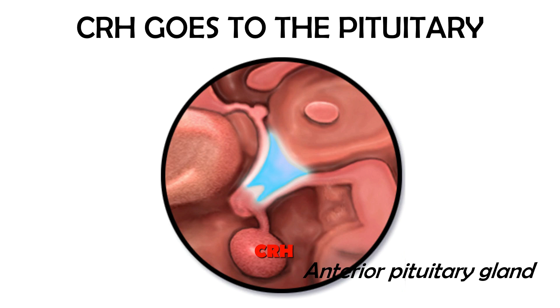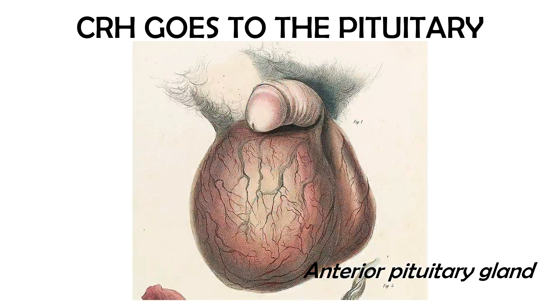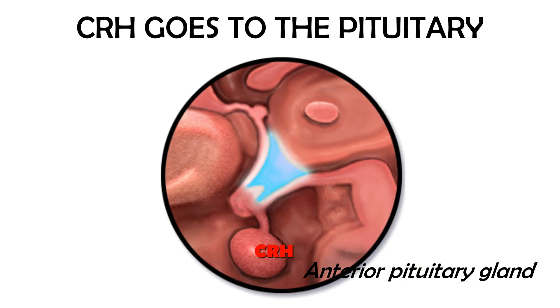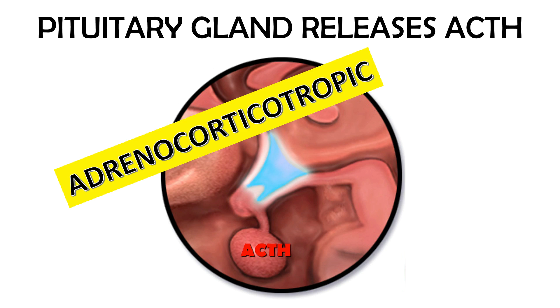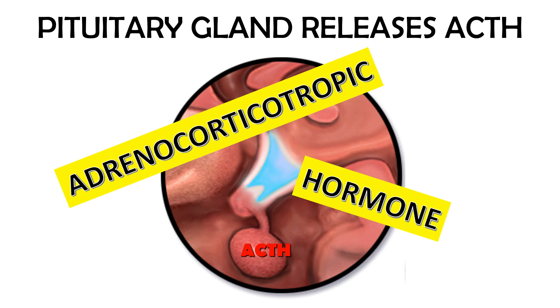The pituitary gland is easy to recognize because it looks like testicles. The pituitary gland then releases ACTH, which stands for adrenocorticotropic hormone.